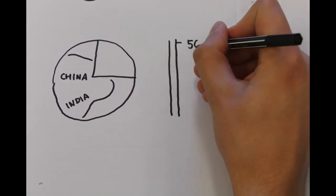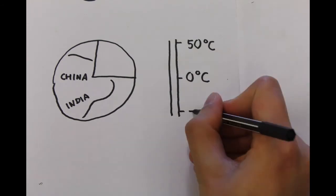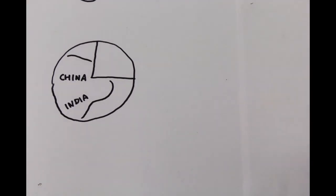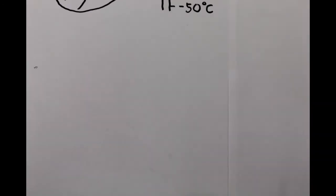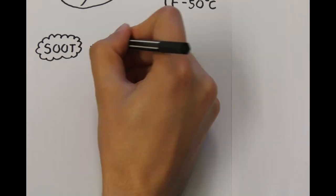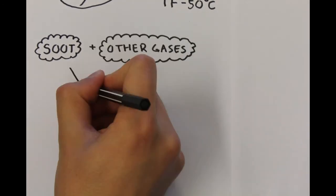So what are these problems? Soot has a lot of ways to present itself. It can heat, cool or dim the atmosphere and the earth. Soot, together with other pollutant gases, form a phenomenon known as brown clouds.